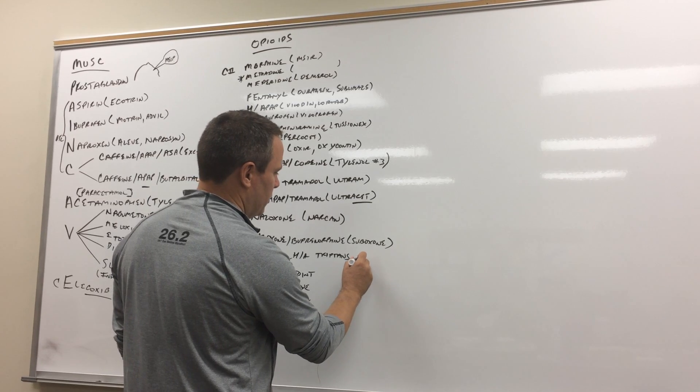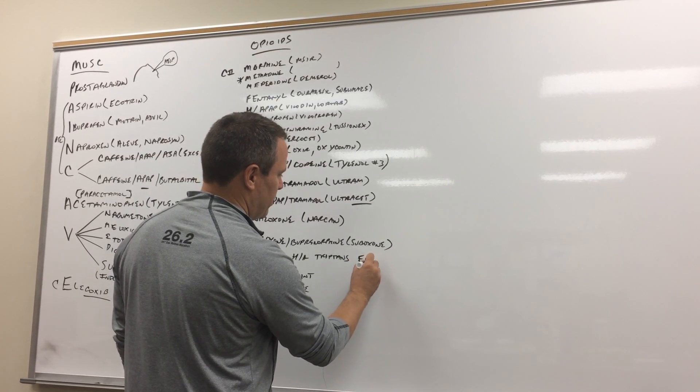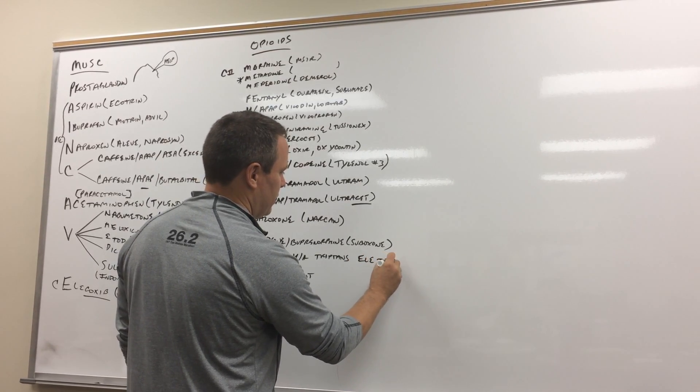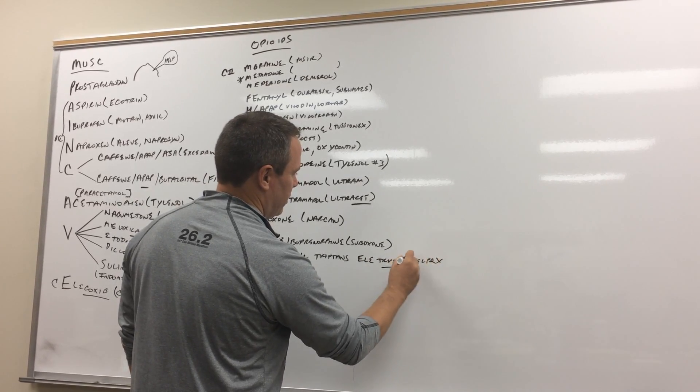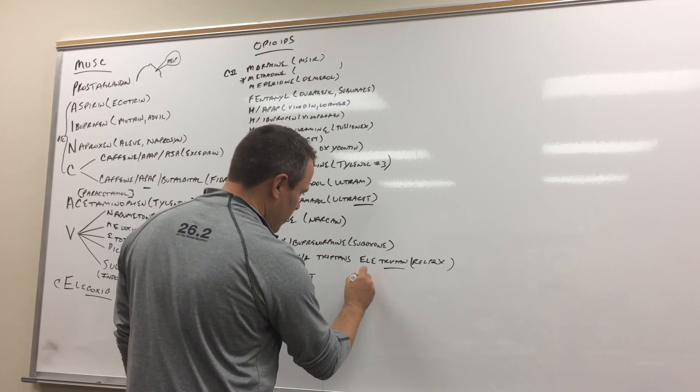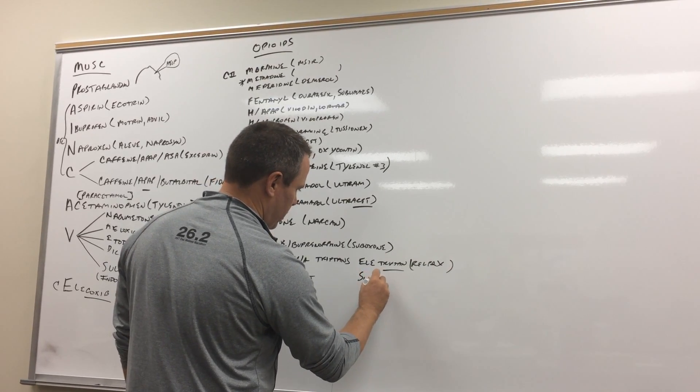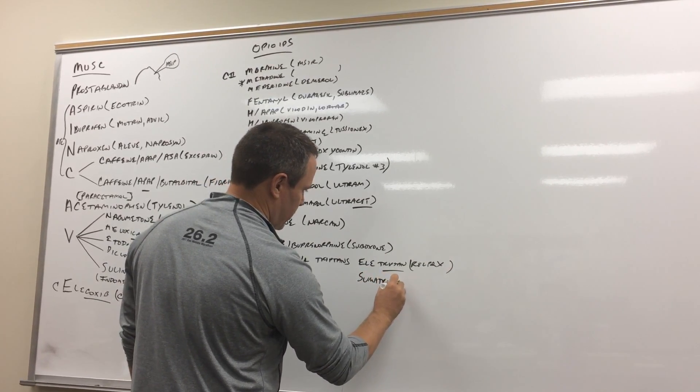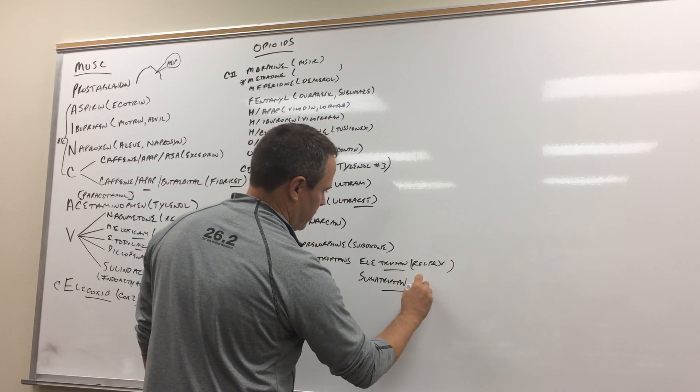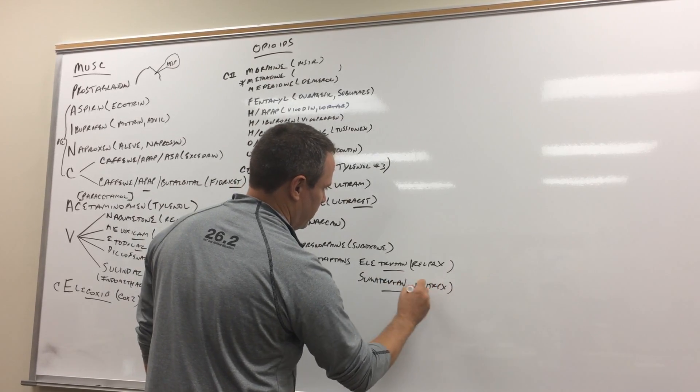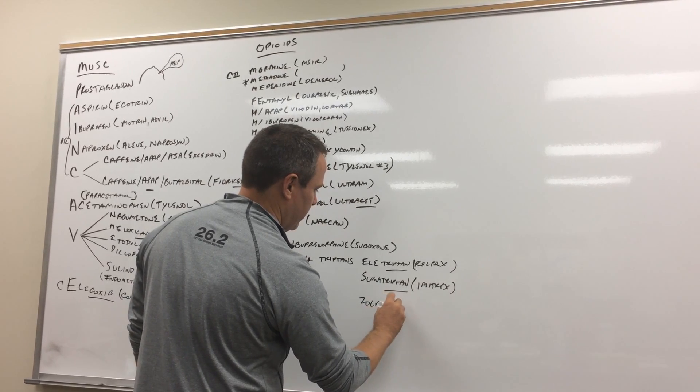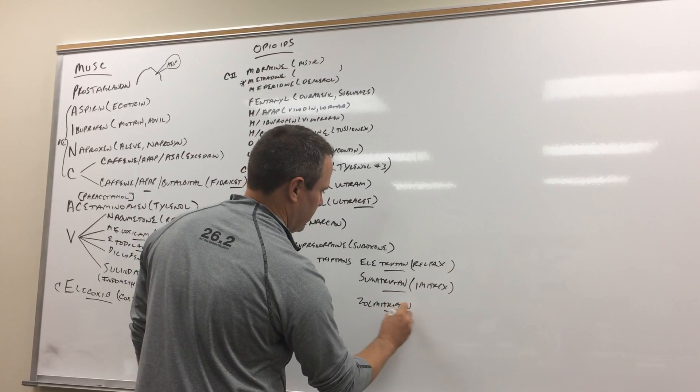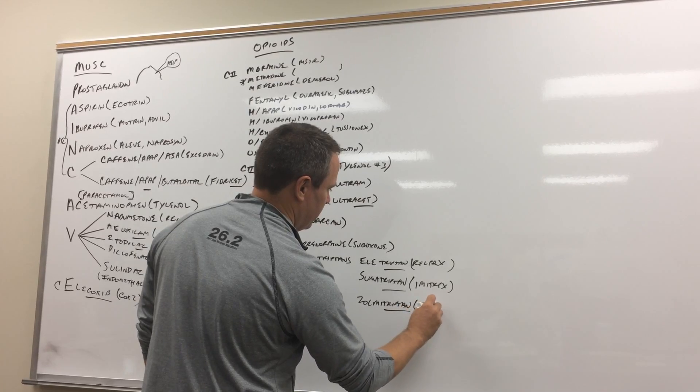So for the headache and the triptans let's do at least three of them. So you've got like eletriptan which is Relpax. And then you've got sumatriptan which is Imitrex. And then the easiest one I guess is zolmitriptan which is Zomig.